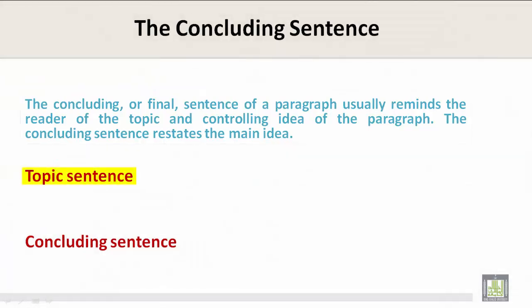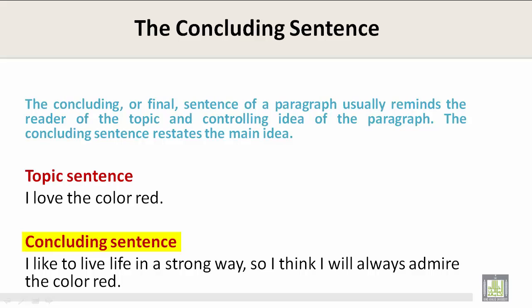Let's take a look at an example. The topic sentence is: 'I love the color red.' And the concluding sentence is: 'I like to live life in a strong way, so I think I'll always admire the color red.' What is the difference between both of them? In the concluding sentence, we have some more information, but nevertheless it merely restates the topic sentence.